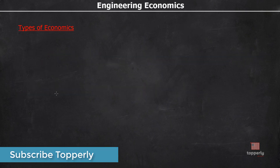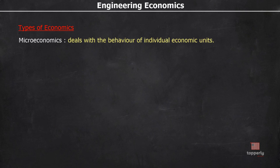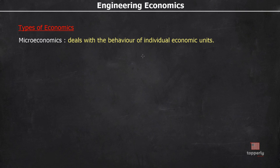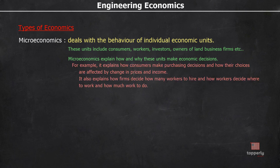Economics is divided into two major branches. The first one is microeconomics. It deals with the behavior of individual economic units, including consumers, workers, investors and owners of land or business firms. It explains how and why these units make economic decisions — for example, how consumers make purchasing decisions and how their choices are affected by changes in price and income, and how firms decide how many workers to hire.